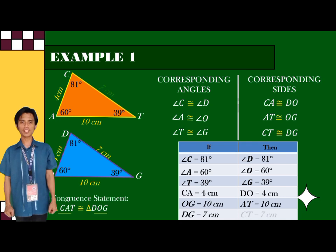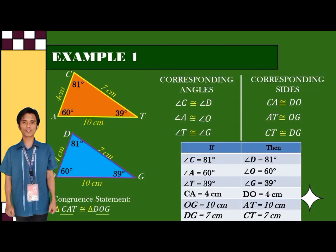And if side CT is 7 cm, then side DG is also 7 cm.